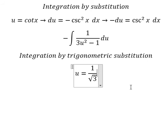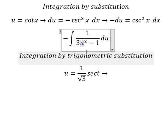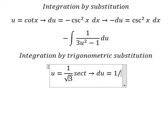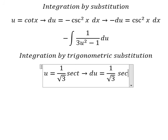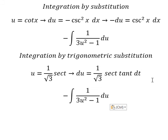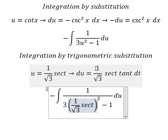I will choose secant of t because if we put this in here we have 1 over 3 sec²(t). We simplify by du, taking the first derivative of both sides. So we have 1 over the square root of 3, secant of t, and we put this in here. We change du for this expression.